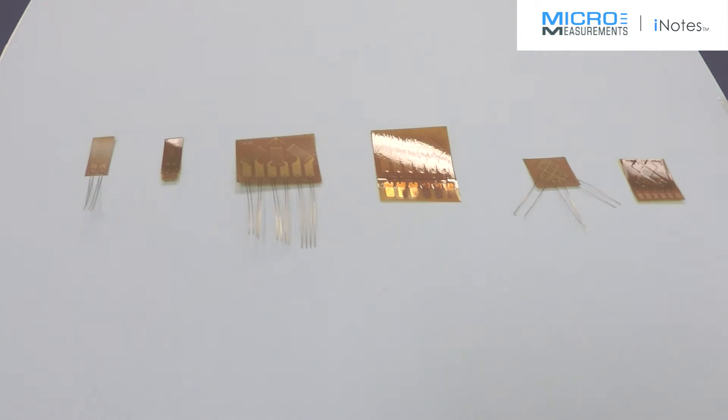Yeah, that is because of the construction. A planar type WK series of gauge, like this 250RBG, come with three-quarter inch beryllium copper leads and there's a pair of them.